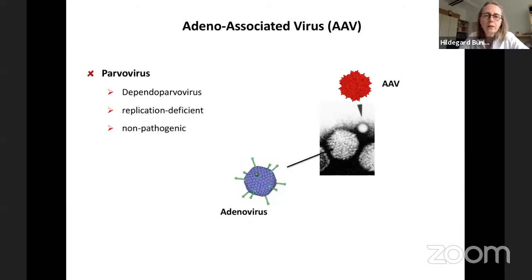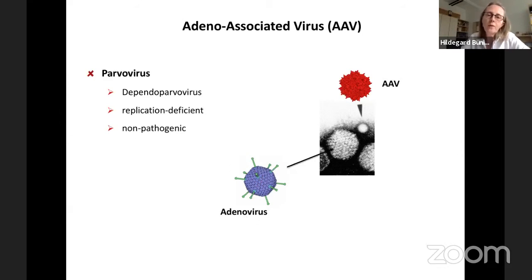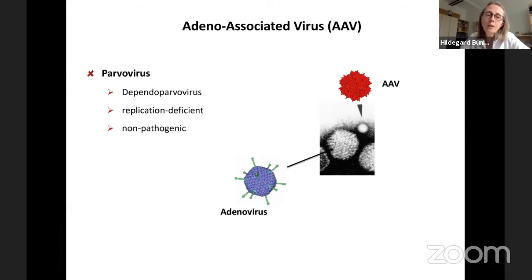AAV vectors are derived from adeno-associated virus, which are members of the parvovirus family. They were identified in the late sixties of the last century as a contamination of adenovirus preparations. Here you see a nice example: this large particle is an adenovirus, and this tiny little one is an AAV. AAVs belong to the dependent parvovirus family because they are replication deficient and require the help of other viruses, such as adenovirus, for their replication and protein production. To date, there is no pathogenicity associated with AAV.